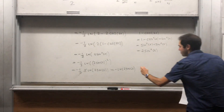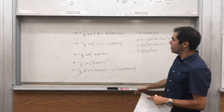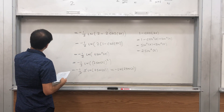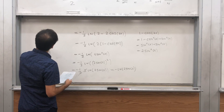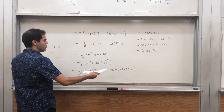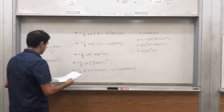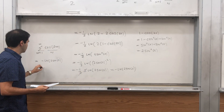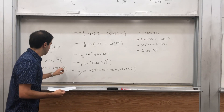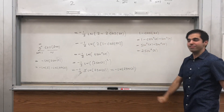Ta-da! So what have we shown? Just unwinding and rewinding: the sum from n = 1 to infinity of cos(2nx) / n equals precisely -ln(2sin x), which, if you want, is -ln 2 - ln(sin x).